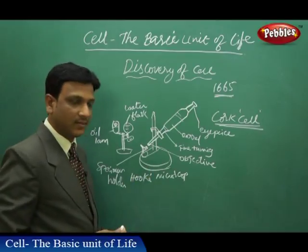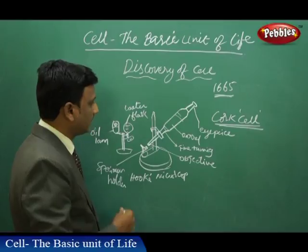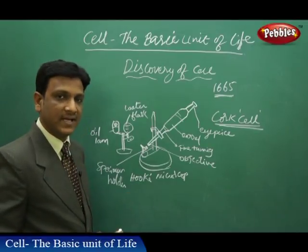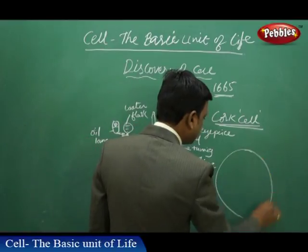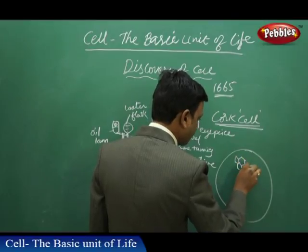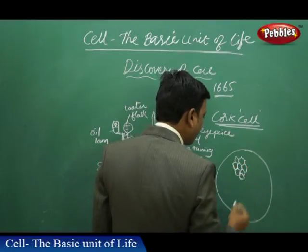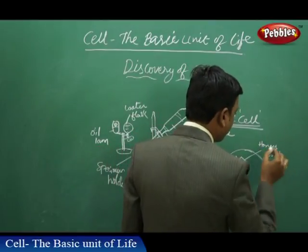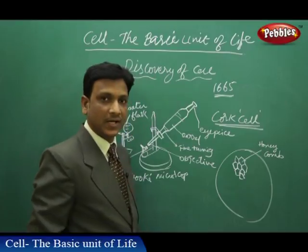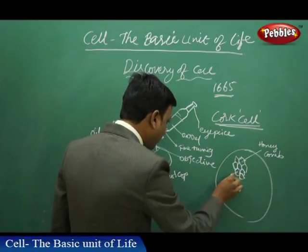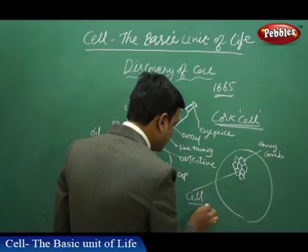This microscope was prepared by Robert Hooke himself to observe the cork cells. When he observed the cork, he found some structures similar to a honeycomb. These structures looked like little spaces or little rooms.